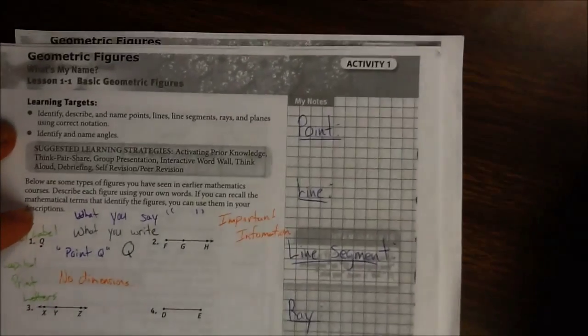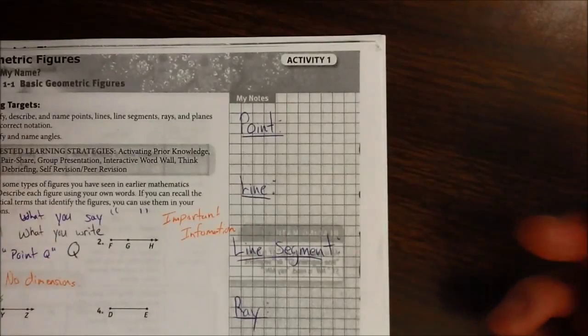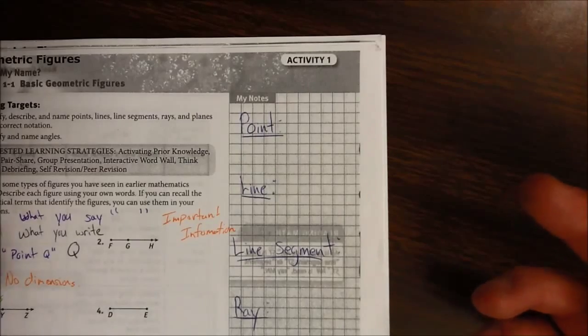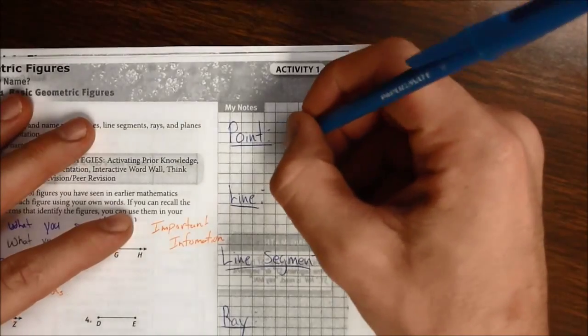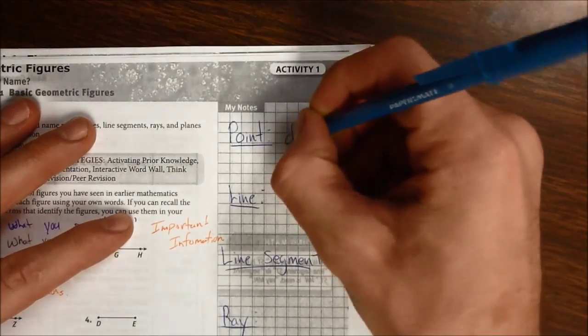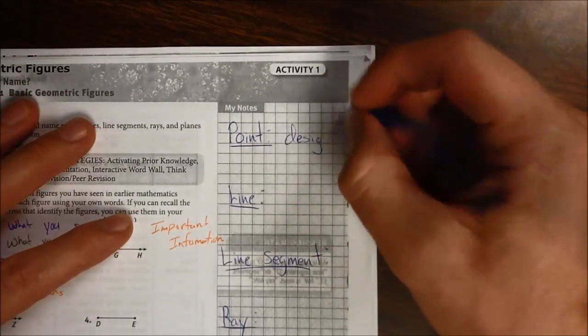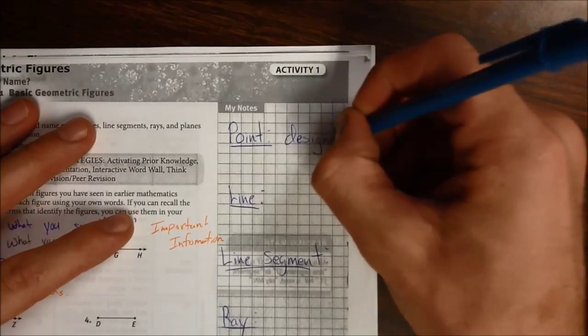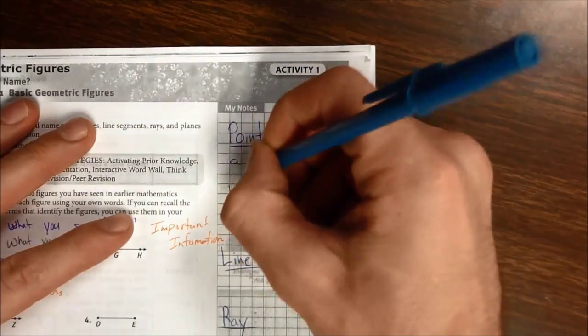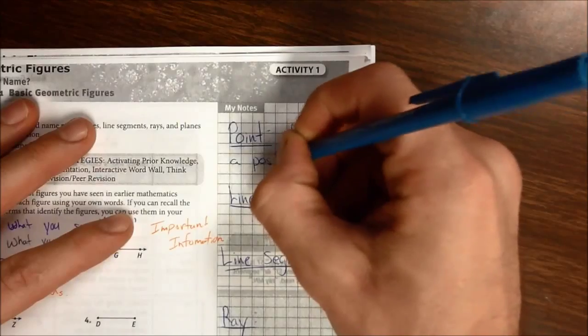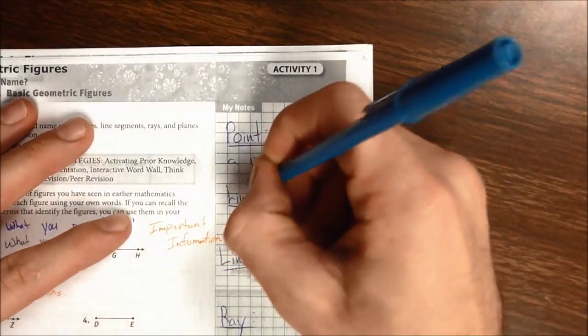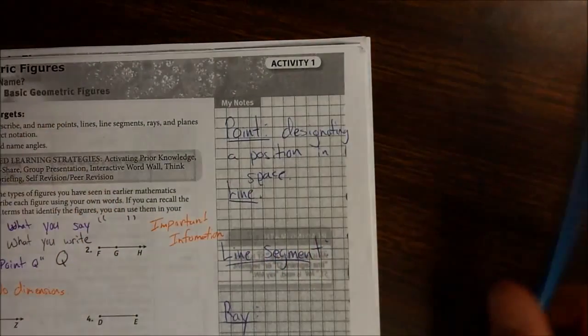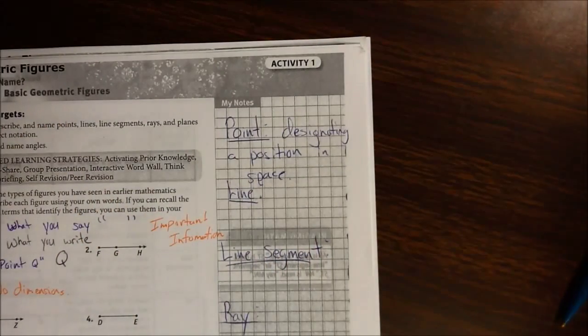Over here on the right, next to point, in order, I mean just to define it, it's pretty basic. A point is simply designating a position in space.